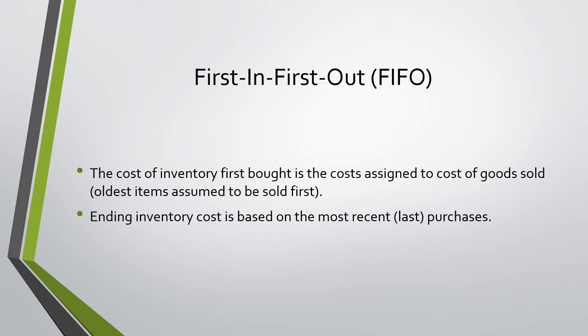The third method is the first in first out method. The cost of inventory first bought is the cost assigned to cost of goods sold, meaning the oldest items are assumed to be sold first. Ending inventory cost is based on the most recent purchases. This is the assumption that we have sold everything that we bought in the beginning, so ending inventory is only our most recent inventory purchases.